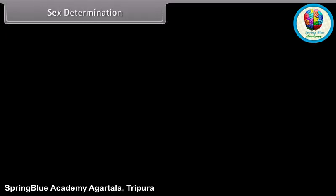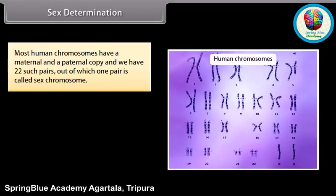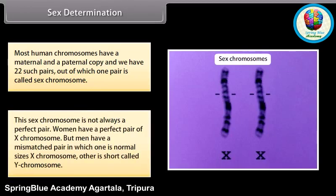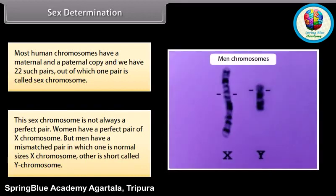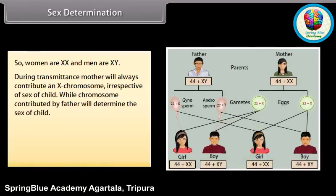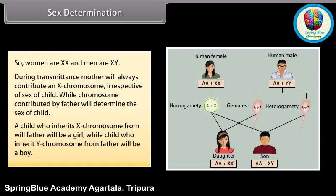Sex determination. Most human chromosomes have a maternal and a paternal copy, and we have 22 such pairs, out of which one pair is called the sex chromosome. This sex chromosome is not always a perfect pair — women have a perfect pair of X chromosomes, but men have a mismatched pair in which one is a normal-sized X chromosome and the other is a short one called the Y chromosome. So, women are XX and men are XY. During transmission, the mother will always contribute an X chromosome irrespective of the sex of the child, while the chromosome contributed by the father will determine the sex of the child. A child who inherits an X chromosome from the father will be a girl, while a child who inherits a Y chromosome from the father will be a boy.